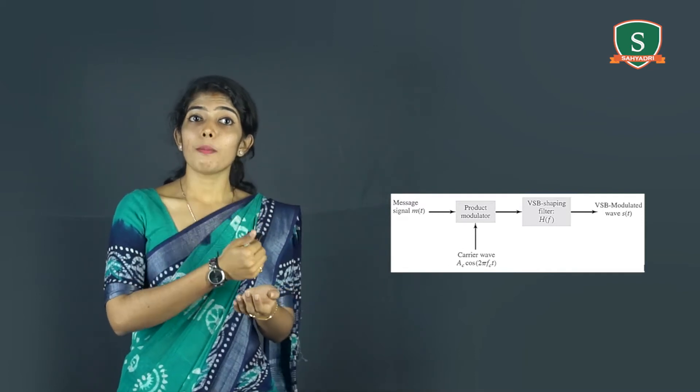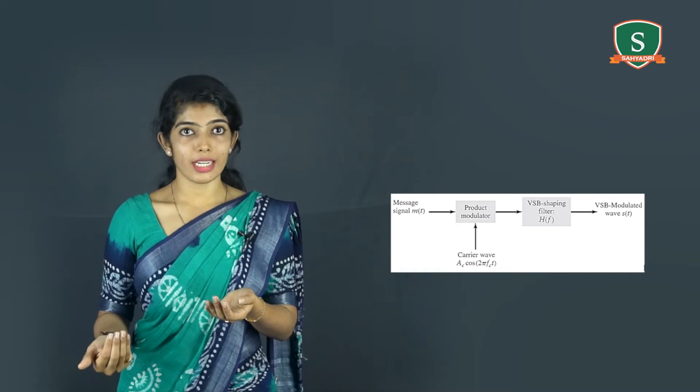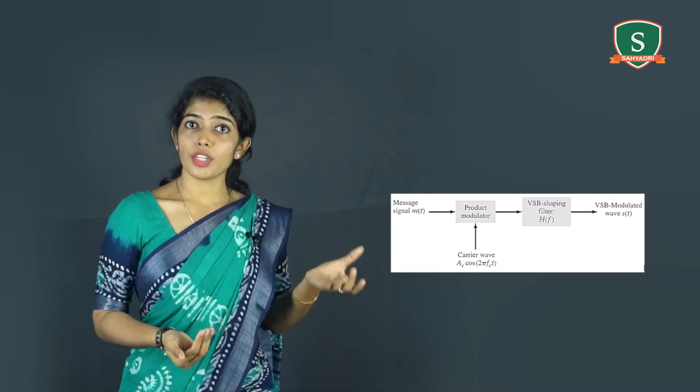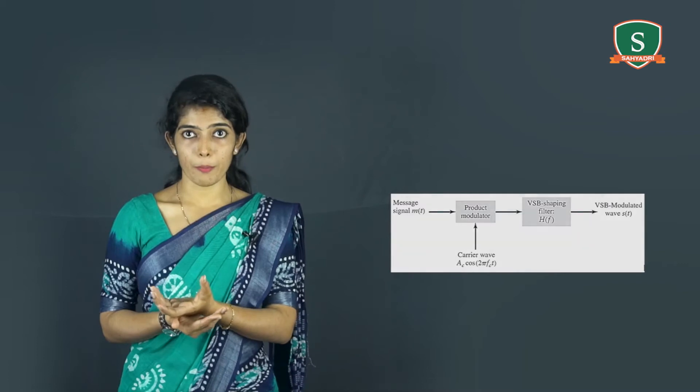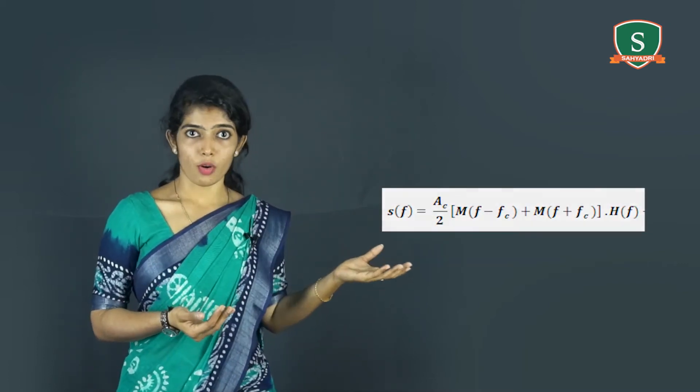This DSB-SC signal is applied to a sideband shaping filter. The filter will pass the wanted sidebands as is and the vestige of the unwanted sideband. Let H(F) denote the transfer function of a sideband shaping filter. Hence, VSB modulated wave is given by the equation as follows.